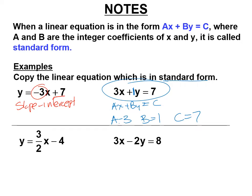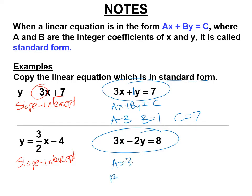Let's do it again — which one is which? On the left is slope-intercept, and standard form is on the right. What's a? a is 3. What's b? b is negative 2, because it's plus by, so how do you get a minus? It's negative. And c is 8. Again, these are the exact same line on a graph — exact same line in different forms.